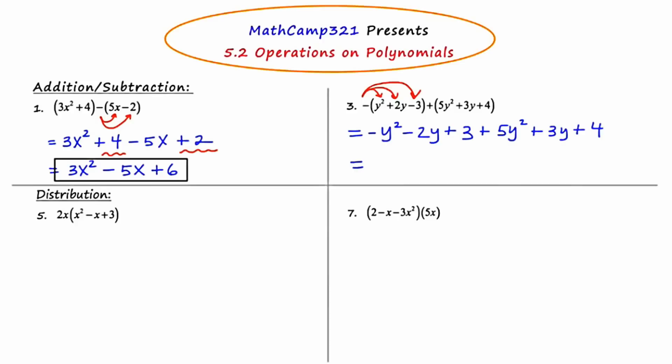Now I'm going to scan for like terms and consider descending exponential order, grouping like terms with the highest power first. I've got negative y squared and positive 5y squared, which nets me 4y squared. Then negative 2y and positive 3y nets me plus y. And plus 3 and plus 4 nets me plus 7.